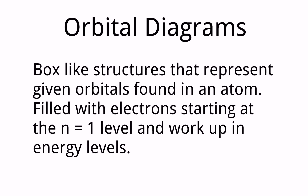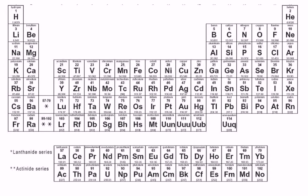Orbital diagrams are box-like structures representing the given orbitals found in an atom. Each suborbital can be filled with two electrons — the p orbitals hold a total of 6, and d holds 10. We always start filling from n equals 1, using the principal quantum numbers from quantum mechanics, and work our way up through energy levels as we fill. Let's start with some simple examples: hydrogen, helium, lithium, and nitrogen.